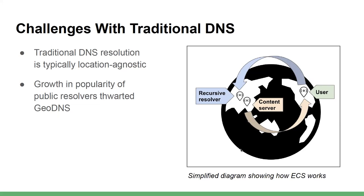I have seen numbers on the APNIC website, and as far as I understand, currently it's just about 65% of users who are using the DNS recursive provider provided by their ISPs. And there's a lot of users who prefer to use public DNS recursives.